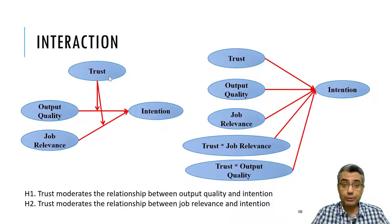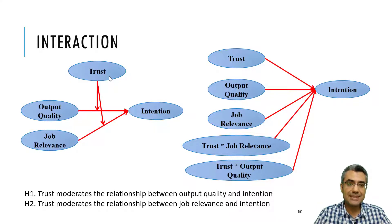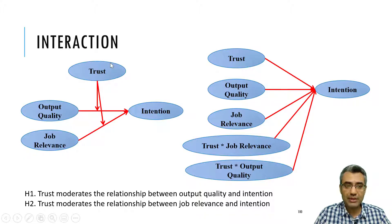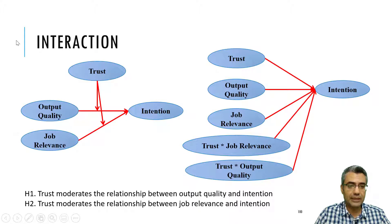This video is about moderation and testing interaction in AMOS. For moderation, there are two types: number one, when the moderator is a continuous variable, and number two, when the moderator is a categorical variable like gender or ethnicity. In this video, the focus will be on continuous values when the moderator is a continuous variable, which I named as interaction.